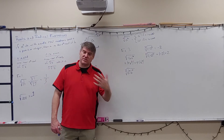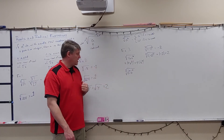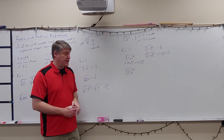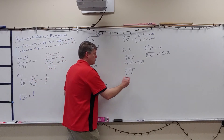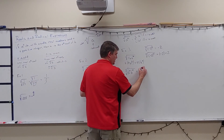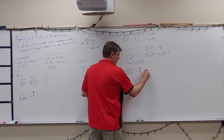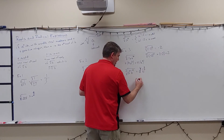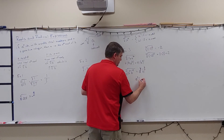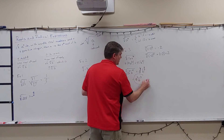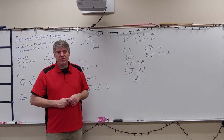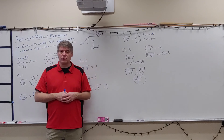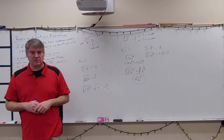For cube roots and higher odd roots, it doesn't matter — you just divide the power by the index. So for example, a⁶ over three gives a², and b⁹ over three gives b³, for a final answer of a²b³. That's an introduction to roots and radical expressions.